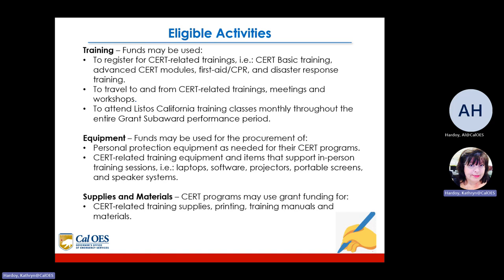Eligible activities include training. Funds may be used to register for CERT-related trainings — i.e. CERT basic training, advanced CERT modules, first aid, CPR, and disaster response training — to travel to and from CERT-related trainings, meetings, and workshops, and to attend LISTOS California training classes monthly throughout the entire grant subaward performance period.